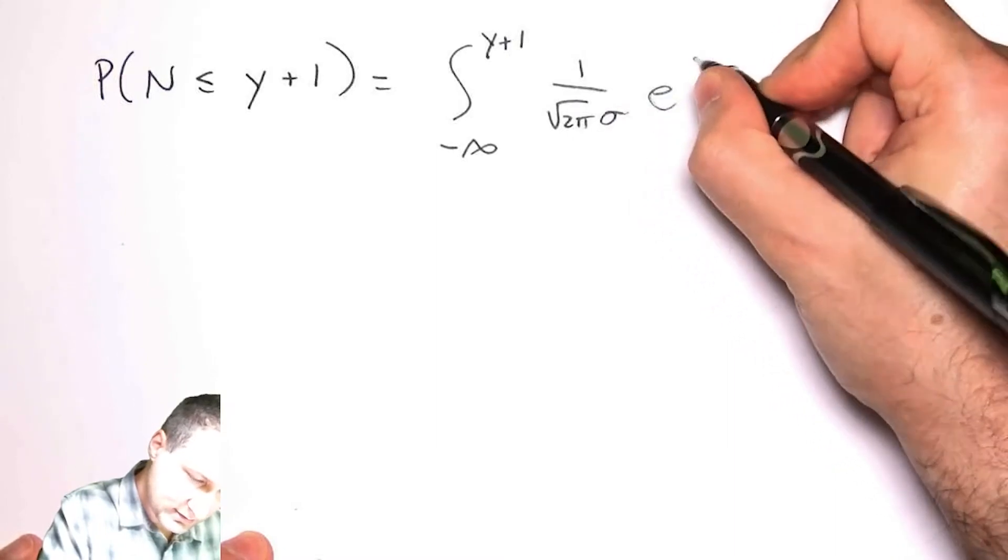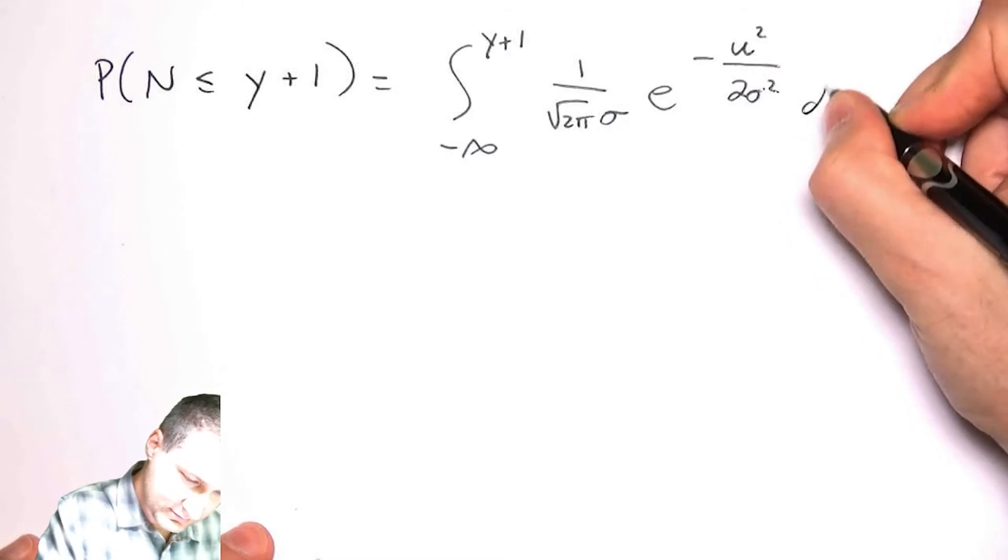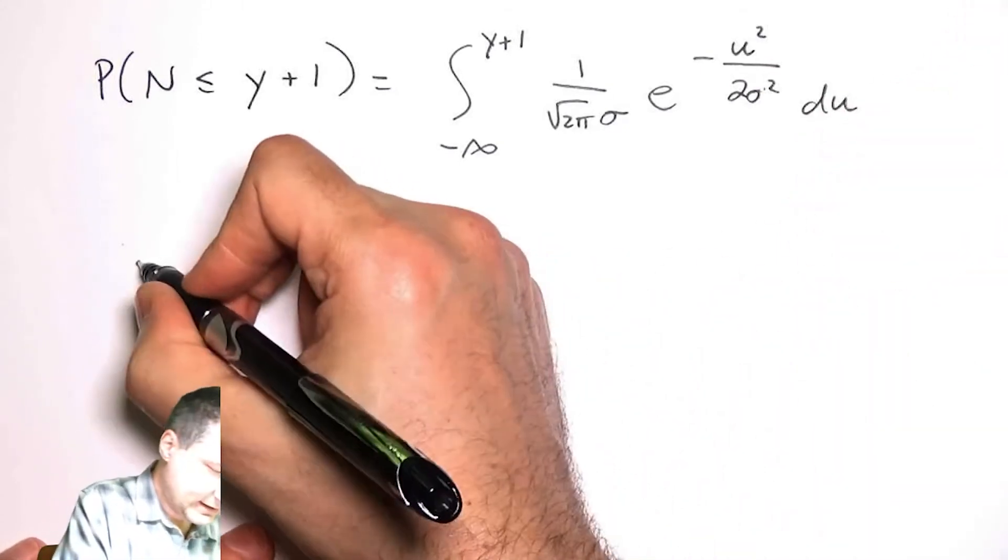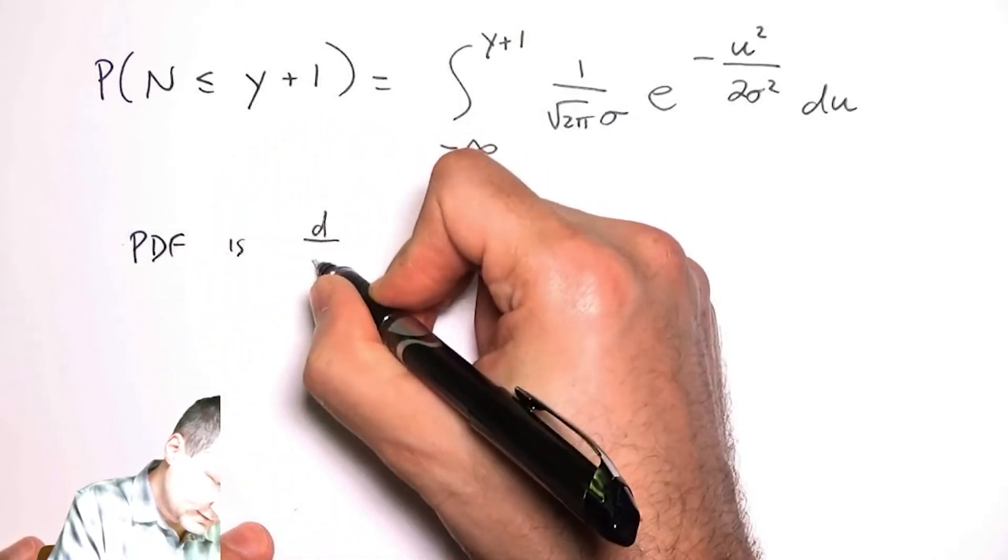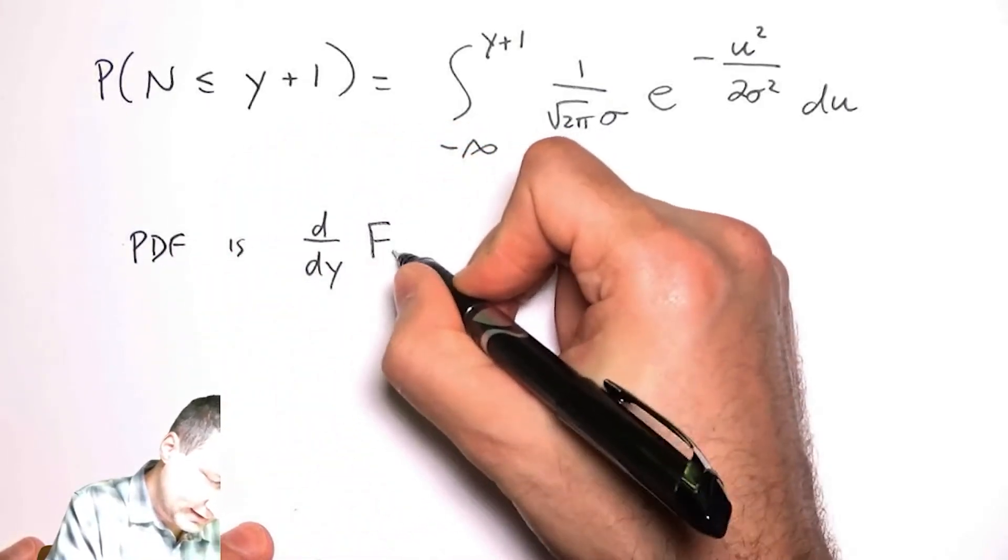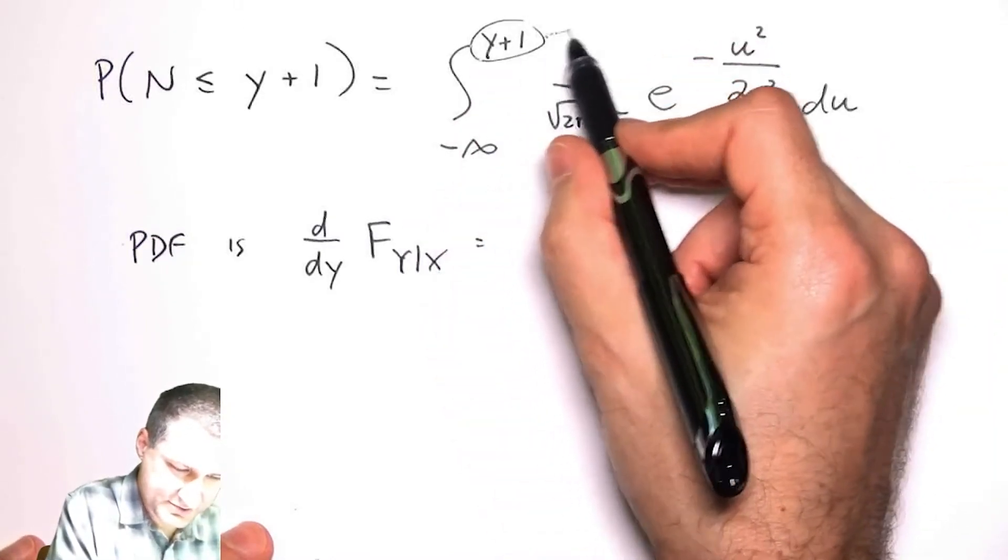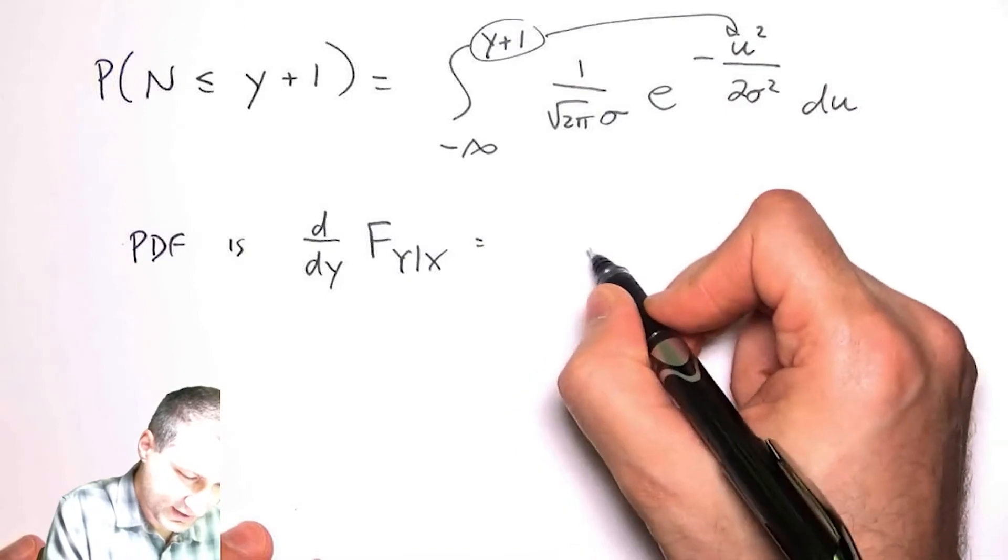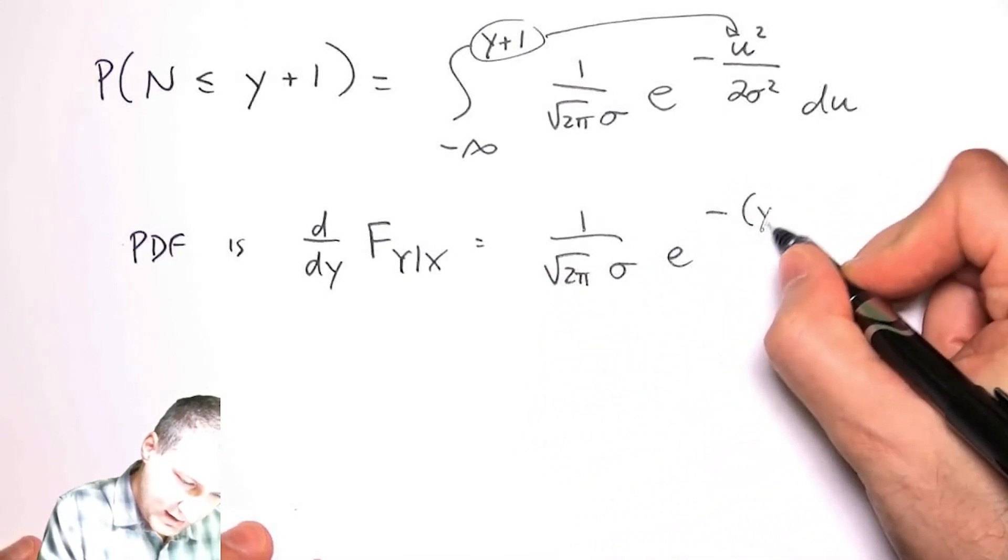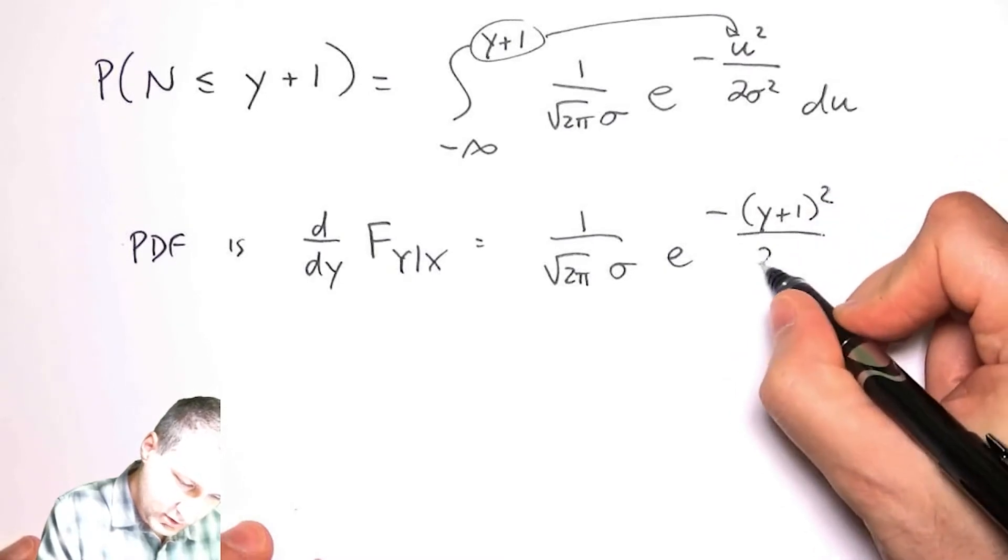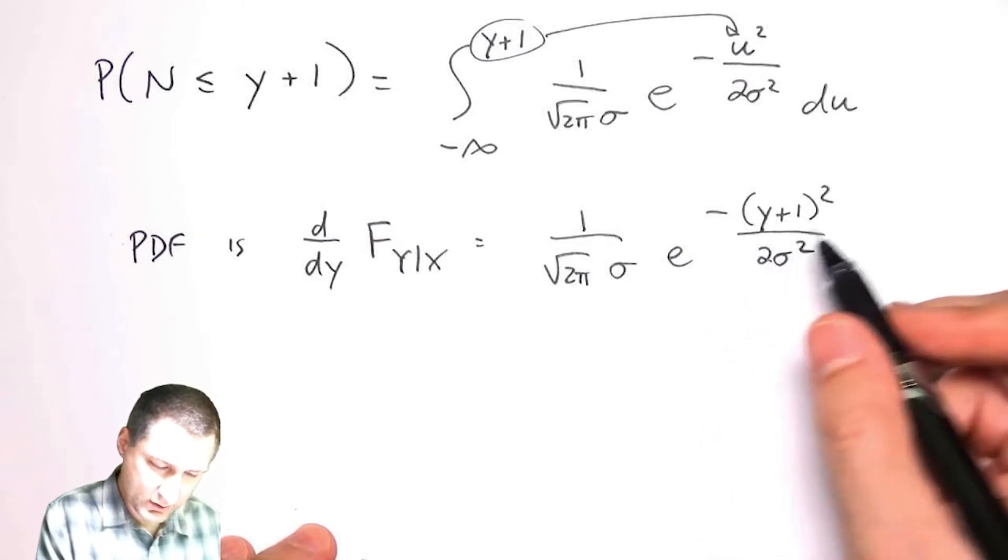What I really care about is the PDF. So the PDF is d/dy of this thing, which by the fundamental theorem of calculus is just I take this thing, I put it over here. What I get is one over square root of two pi sigma e to the minus (y plus one) squared over two sigma squared. So what did I learn? I learned that actually this is basically a Gaussian with mean equal to minus one and variance sigma squared.